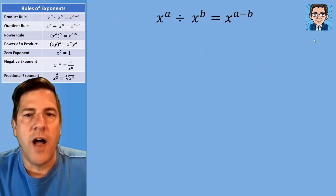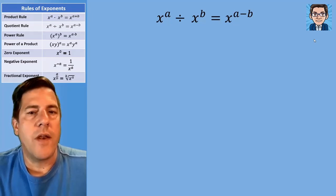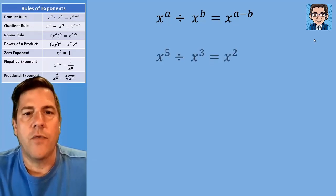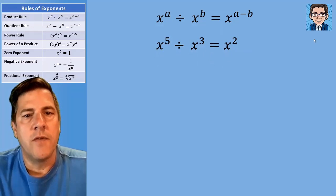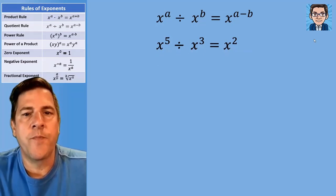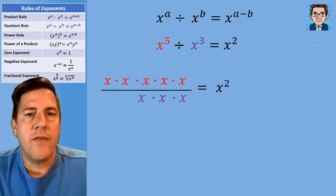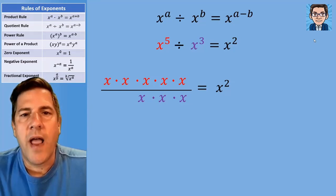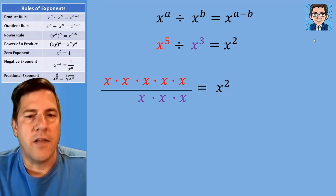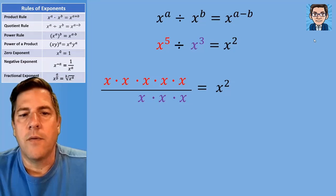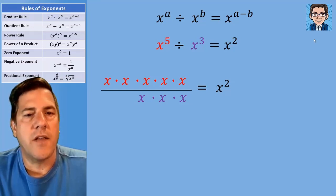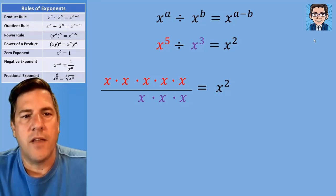The next rule is dividing. Rather than adding, we're going to subtract. So if we've got something like x to the fifth divided by x to the third, we're going to get x to the second — five minus three is two. Visually, if you've got five x's divided by three x's, three of those cancel out and we're left with two. That's why we subtract to get the answer.